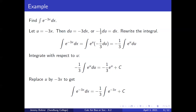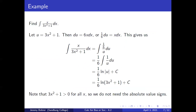Replacing u by negative 3x, we get the integral of e to the negative 3x dx equals negative one-third e to the negative 3x plus c. Next, find the integral of x over 3x squared plus 1 dx. We let u equal 3x squared plus 1 and du equals 6x dx, or one-sixth du equals x dx. This gives one-sixth times the integral of 1 over u du, which equals one-sixth times the natural log of the absolute value of u plus c, equal to one-sixth times the natural log of 3x squared plus 1 plus c. Since 3x squared plus 1 is greater than 0 for all x, we do not need the absolute value signs.